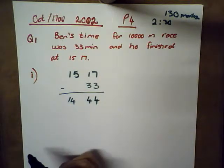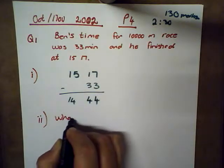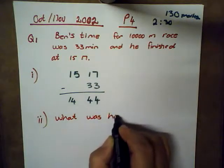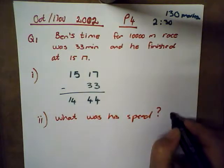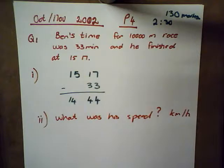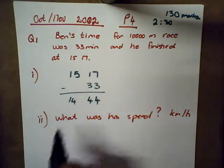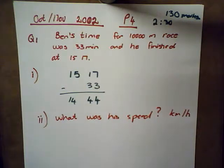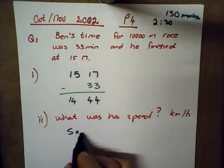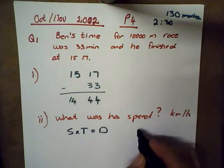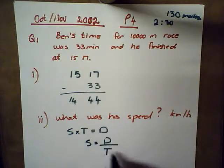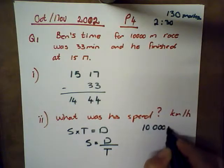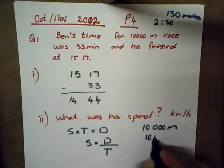Let's start with the next one. They ask what was Ben's average speed for the race, giving your answer as kilometers per hour. So we've got to do a little bit of conversion here. If we look at speed we know that speed times time equals distance. Speed is what we want to find, so speed would be distance divided by time.